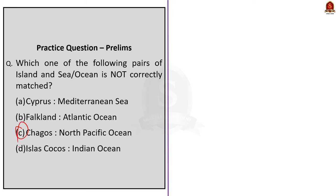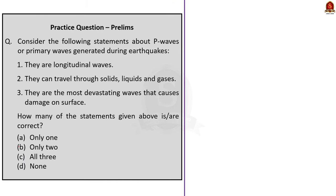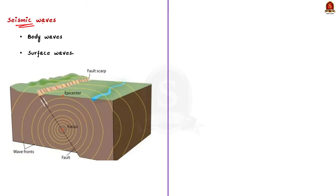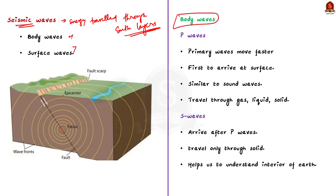This MCQ is about statements regarding primary waves or P waves generated during earthquakes. Seismic waves are waves of energy that travel through the Earth's layers as a result of geophysical phenomena like earthquakes, volcanic eruptions, landslides and large man-made explosions. Earthquakes generate two primary categories of seismic waves: body waves and surface waves. Body waves are generated due to the release of energy at the focus and move in all directions through the body of the Earth. They are further divided into P waves and S waves.